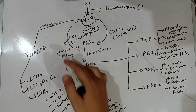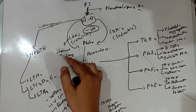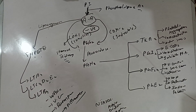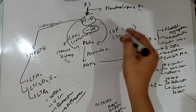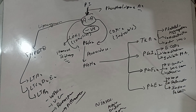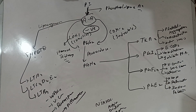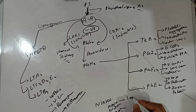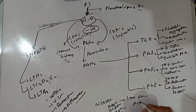Due to inhibition of COX-1, NSAIDs damage stomach and kidney function as a side effect. By inhibition of COX-2, they prevent and treat inflammation.